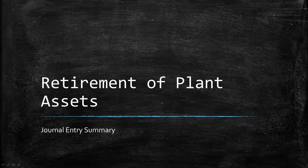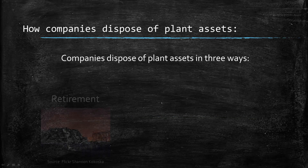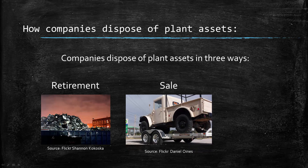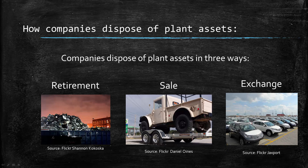Retirement of plant assets. Companies dispose of plant assets generally in three ways. One is retirement, which is just getting rid of an asset. The second is sale, where we sell it for some proceeds. And the third is through exchange, such as exchanging an older delivery van for a new delivery van. In this video, I'm just going to talk about the sale and the retirement of assets.